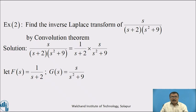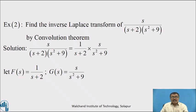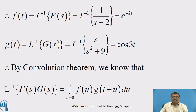Now, another example: find the inverse Laplace transform of s/((s+2)(s²+9)). Solution: s/((s+2)(s²+9)) can be split as the product of two functions: 1/(s+2) and s/(s²+9). Let F(s) = 1/(s+2) and G(s) = s/(s²+9). Then f(t) = L⁻¹{1/(s+2)} = e^(−2t), and g(t) = L⁻¹{s/(s²+9)} = cos 3t.